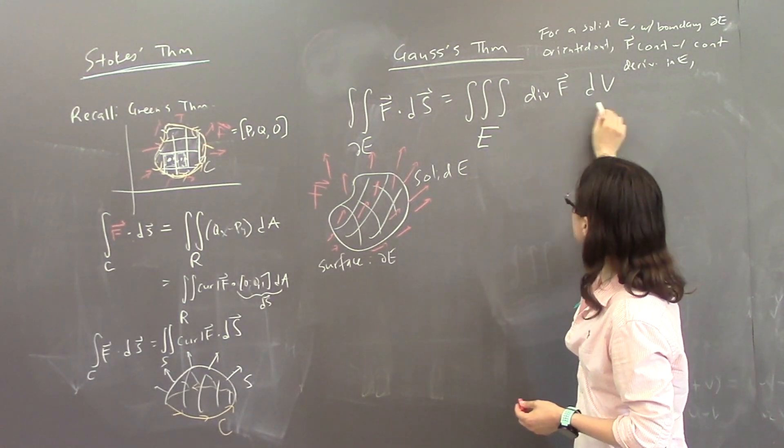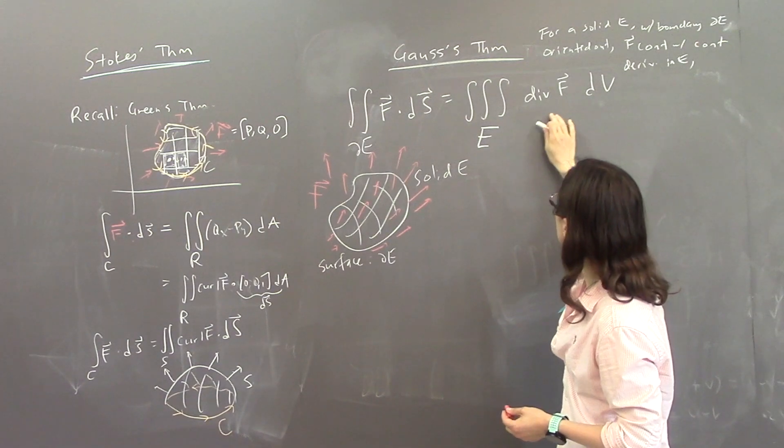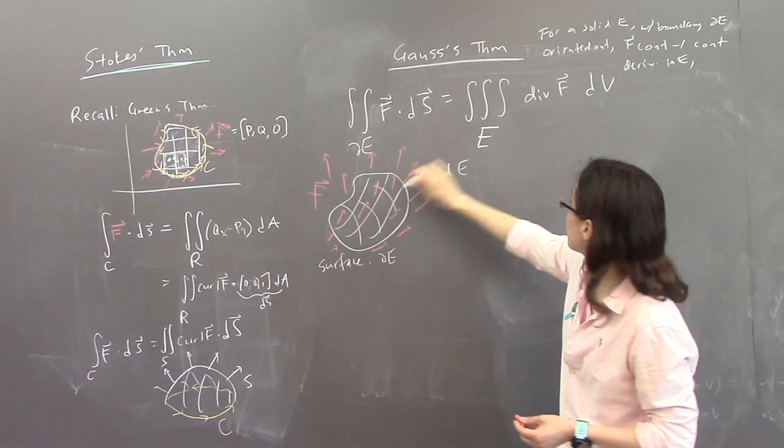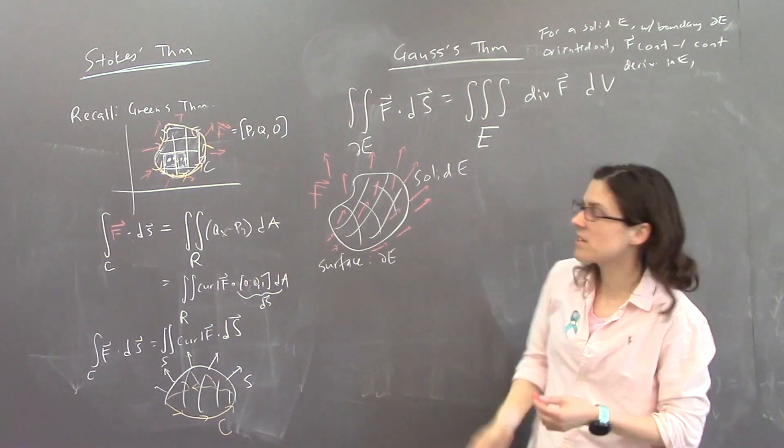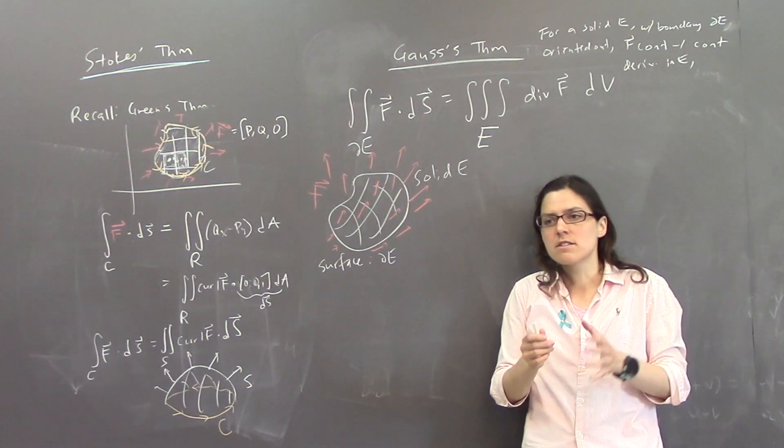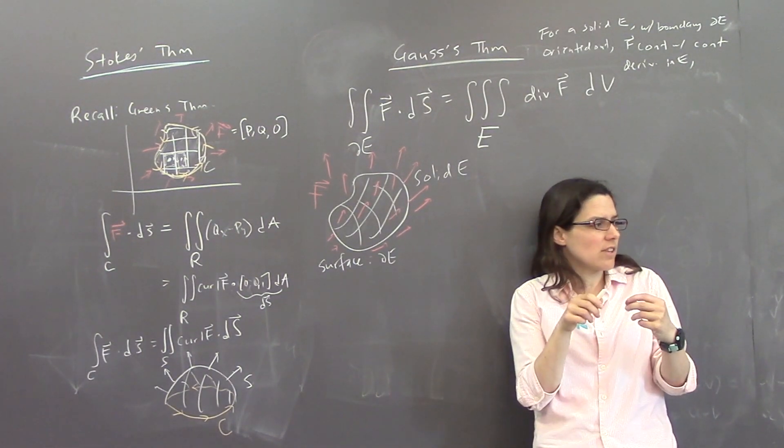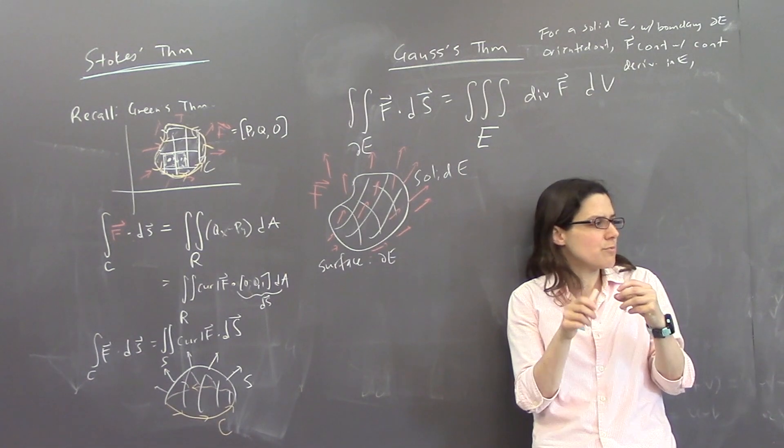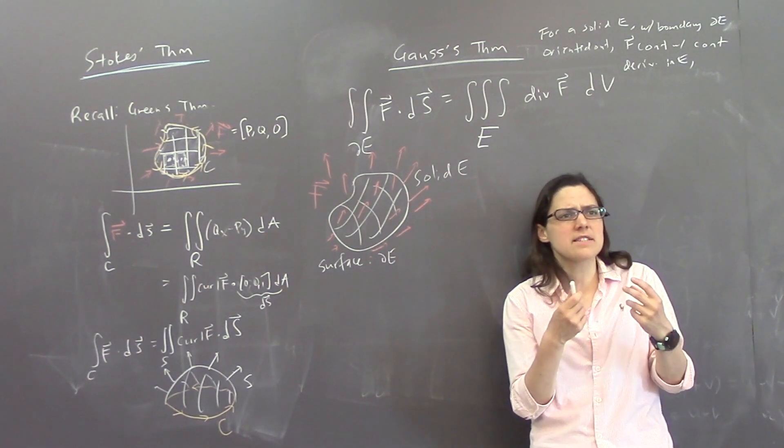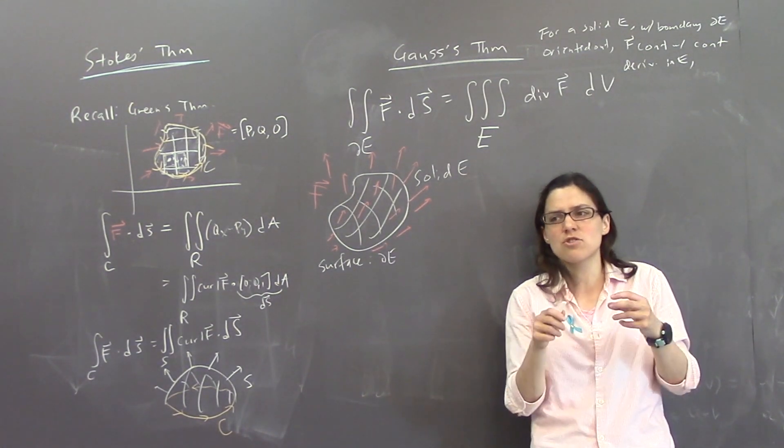This, on the right hand, says, well, you could just, instead of doing that, doing the flux on the boundary surface, you could measure the divergence at each point inside. So remember, we thought about the divergence as measuring, like, how much stuff is created or destroyed at each point.